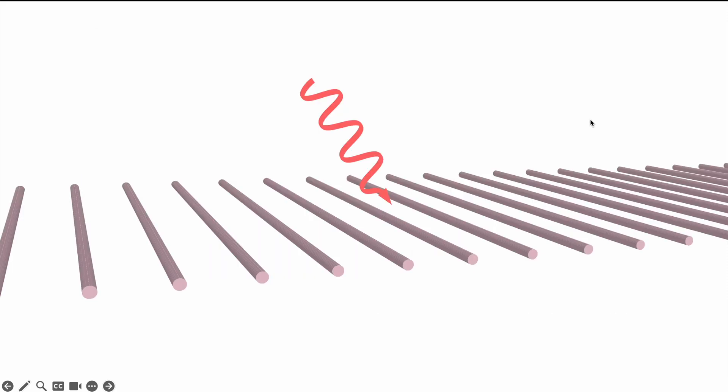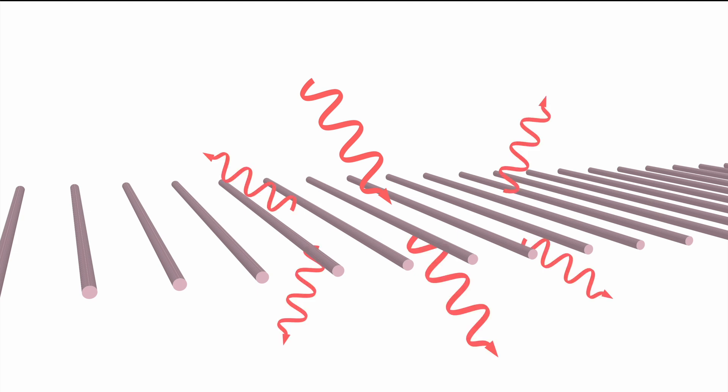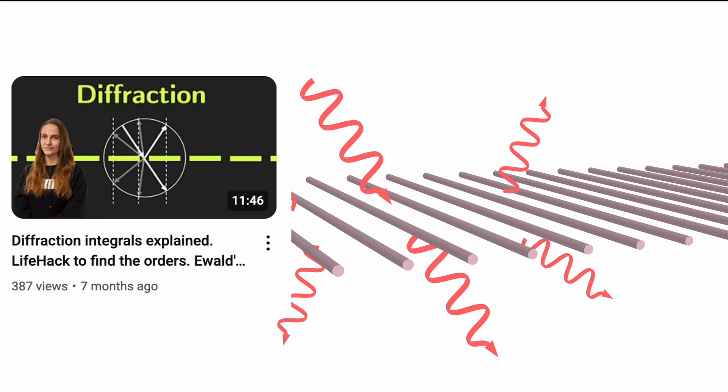The diffraction orders arise due to sophisticated interference of waves reflected from each track. So, this set of tracks can actually be treated as a diffraction grating and the beam simply undergoes diffraction on it.